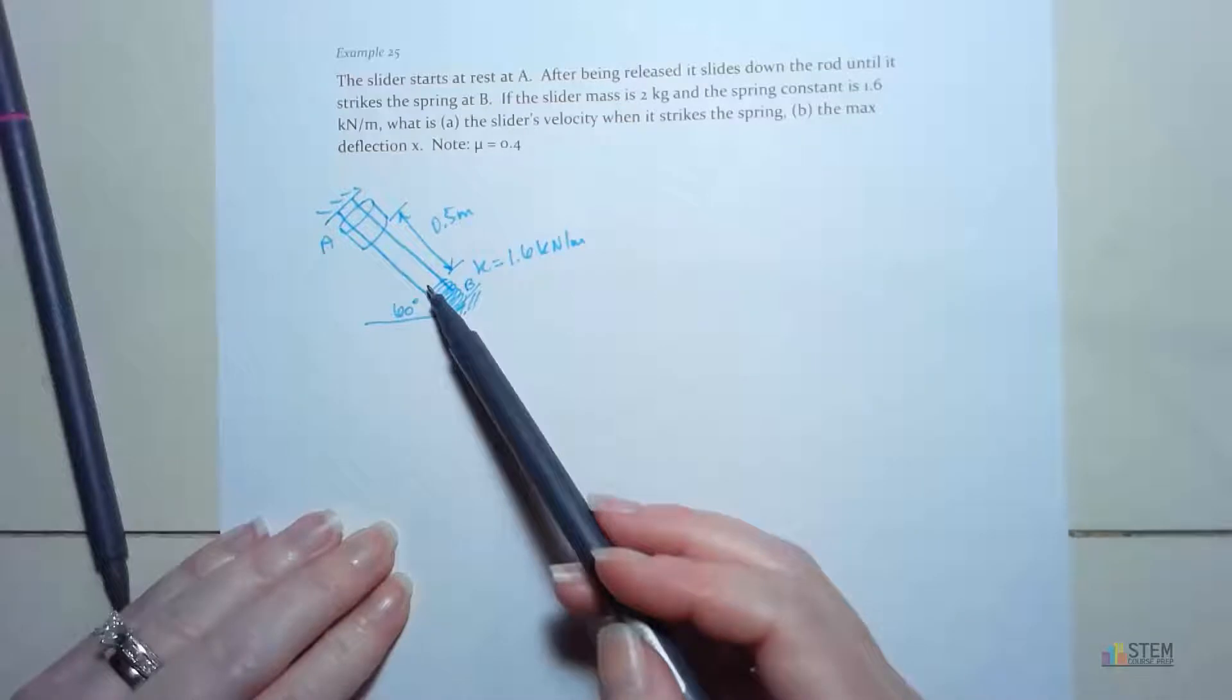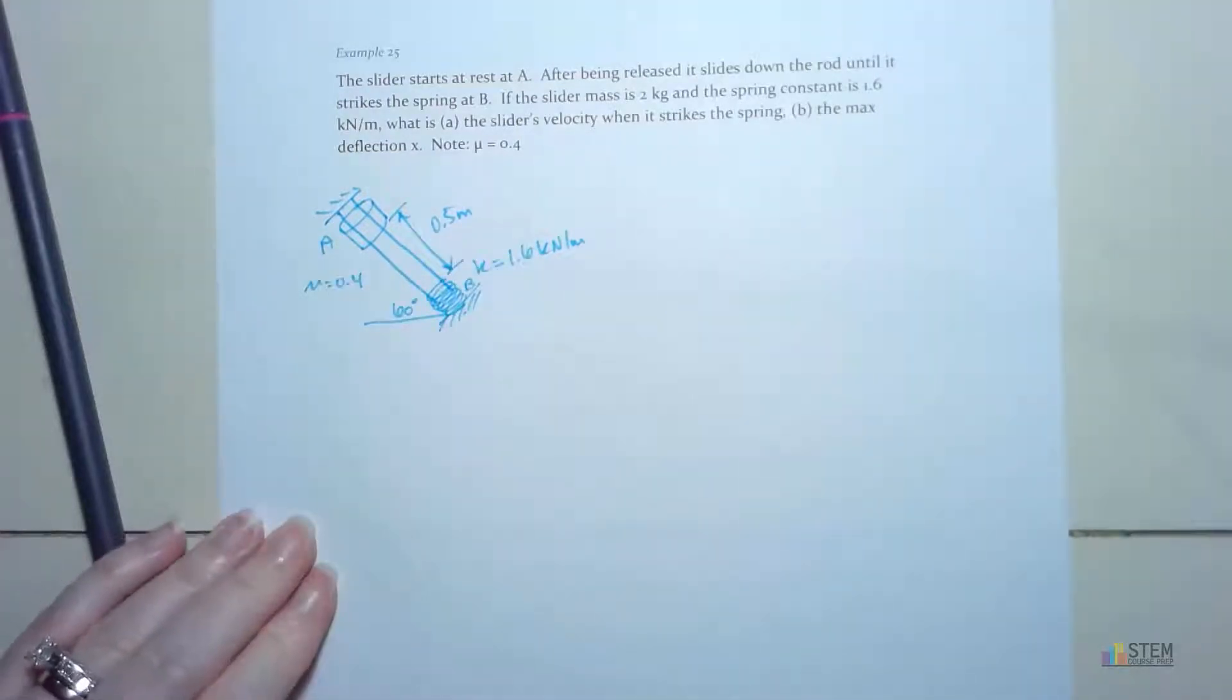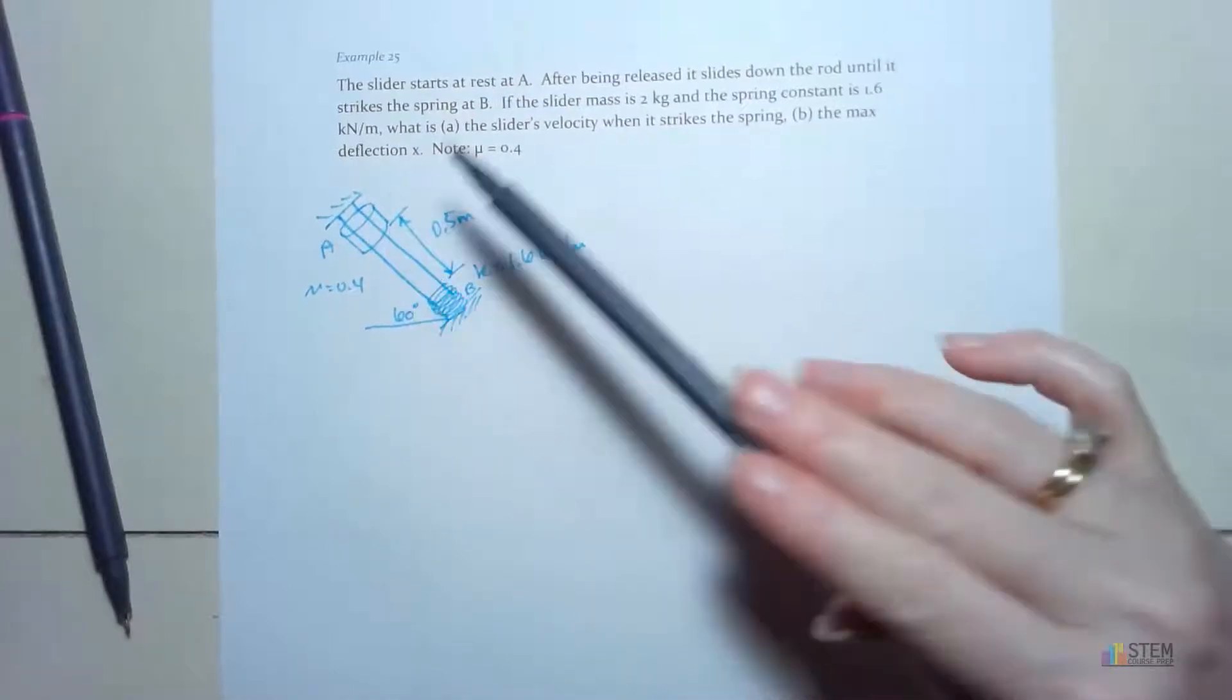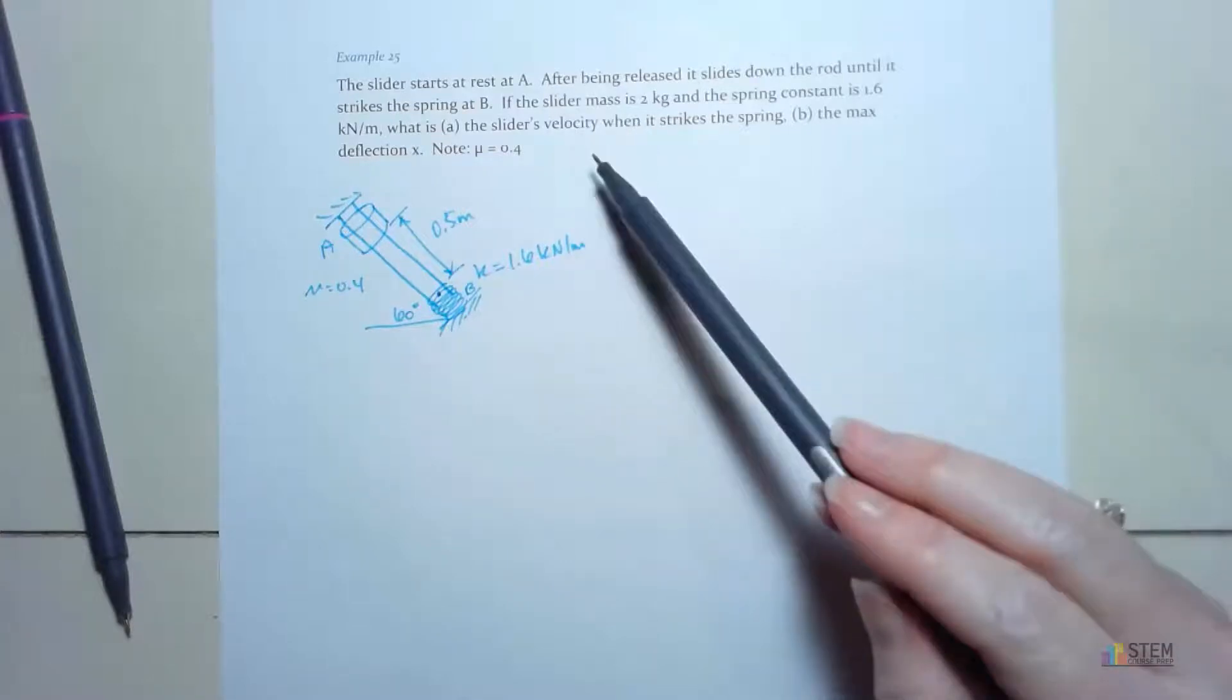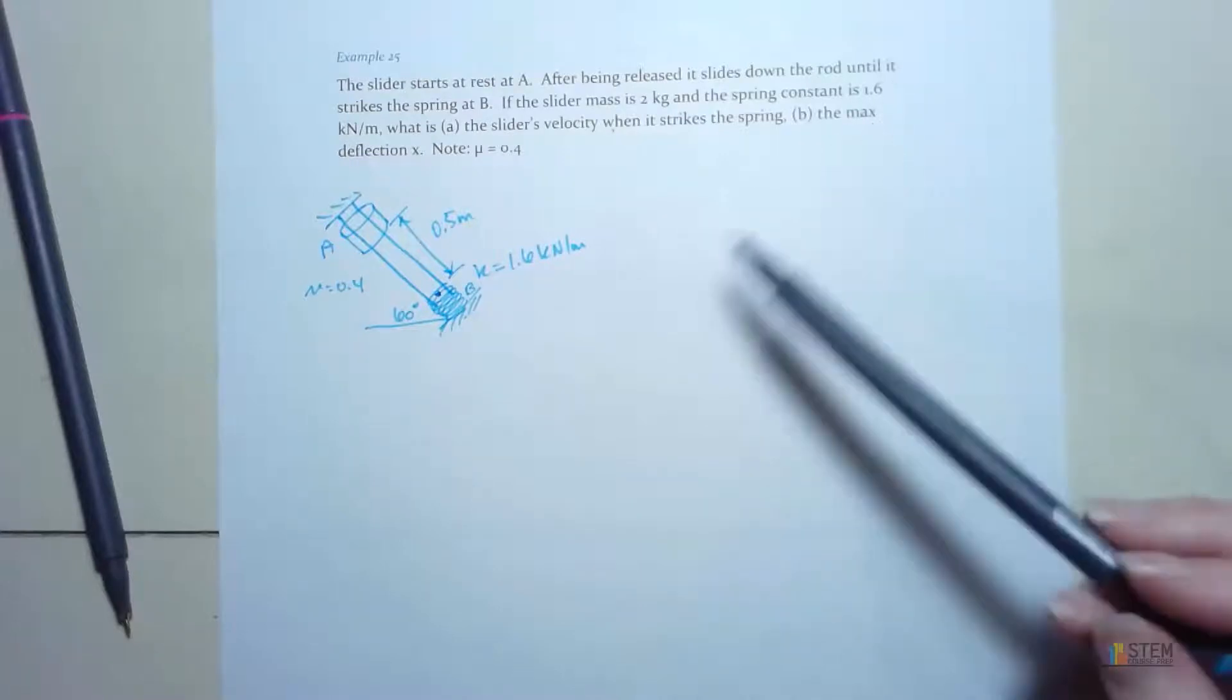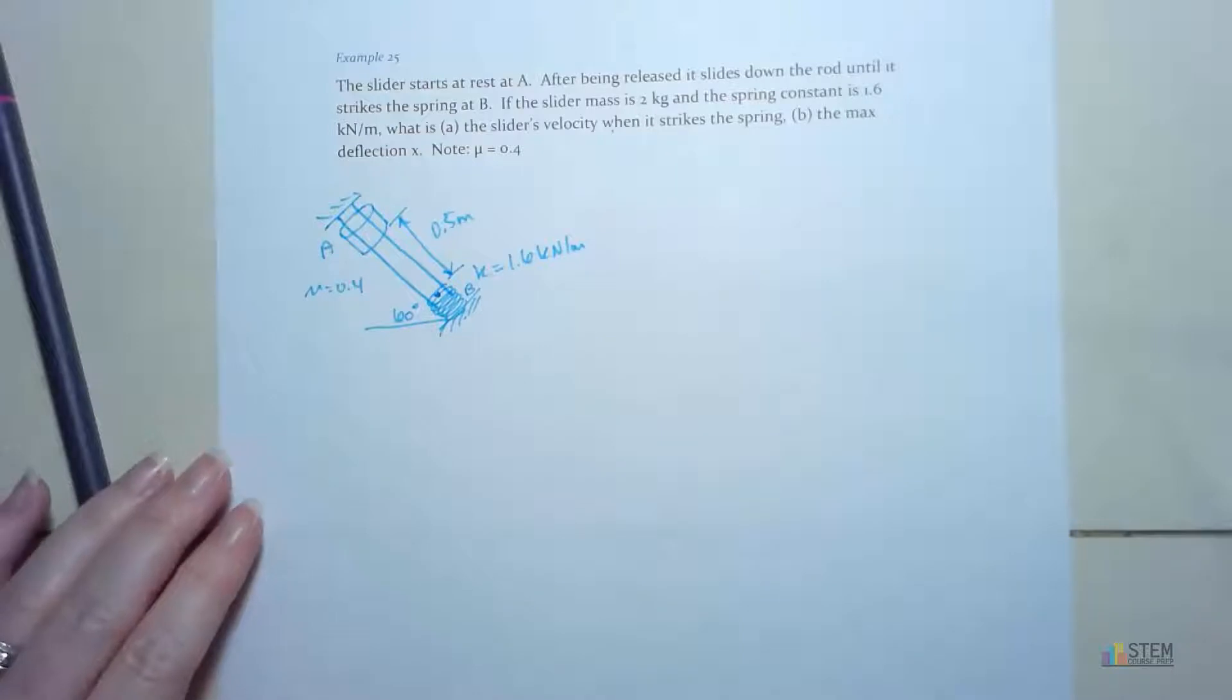And then as the slider slides along this rod, there's going to be friction. So our coefficient of friction is 0.4. So that's what our picture looks like. Now let's see what we're wanting to do. The slider is going to be starting at rest at A, and then after it's released, it slides down the rod until it hits this spring at B. Now the slider has a mass of 2 kilograms. We want to know the slider's velocity when it strikes the spring, and then we want to figure out how much deflection we have in the spring. So how much does the spring go down once the mass hits it?